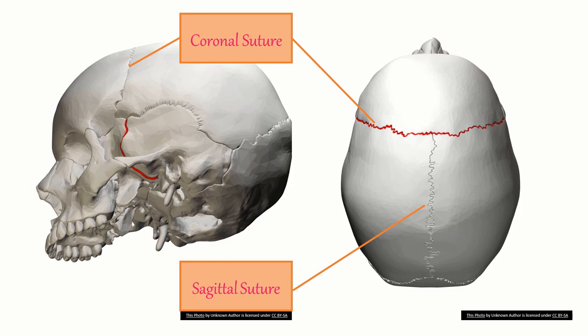Before we move further into sections, let's talk about sutures. The coronal suture separates the frontal bone from the two parietal bones. Between the two parietal bones is the sagittal suture. At the rear is the lambdoid suture, which separates the parietal bones from the occipital bone. These sutures act as landmarks and help localize lesions with respect to the calvarium.